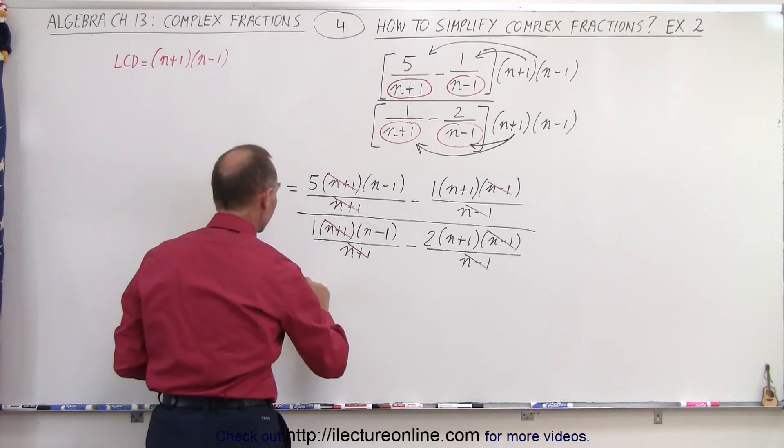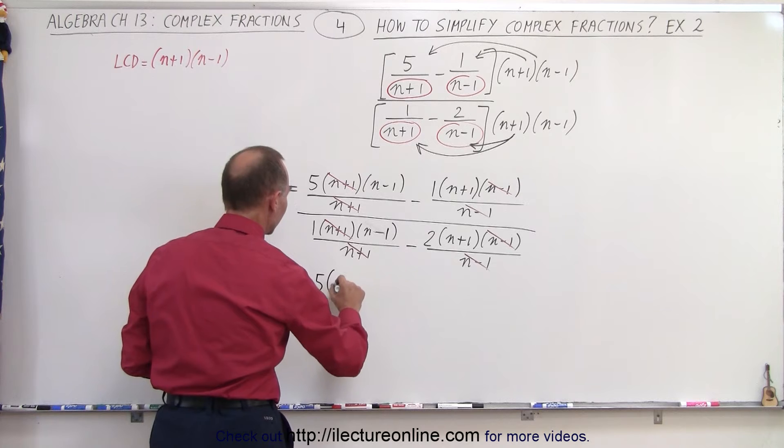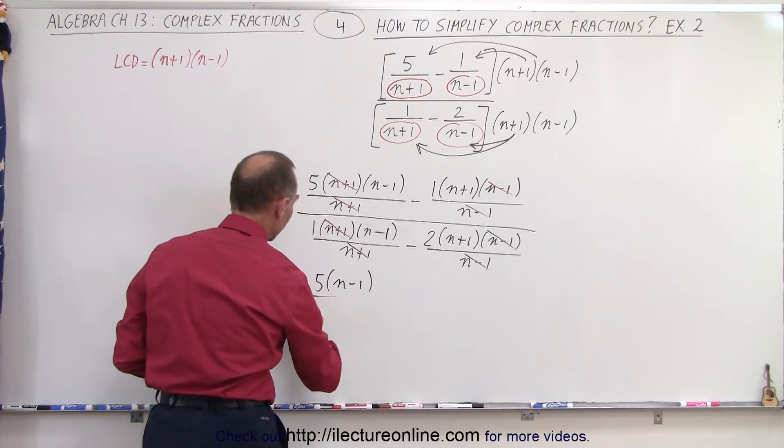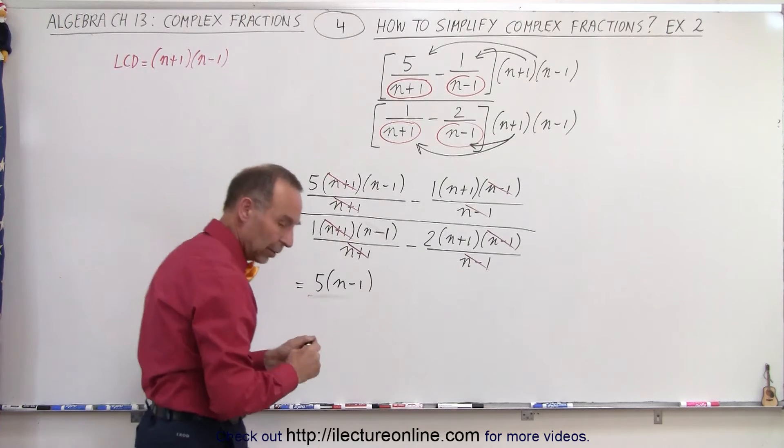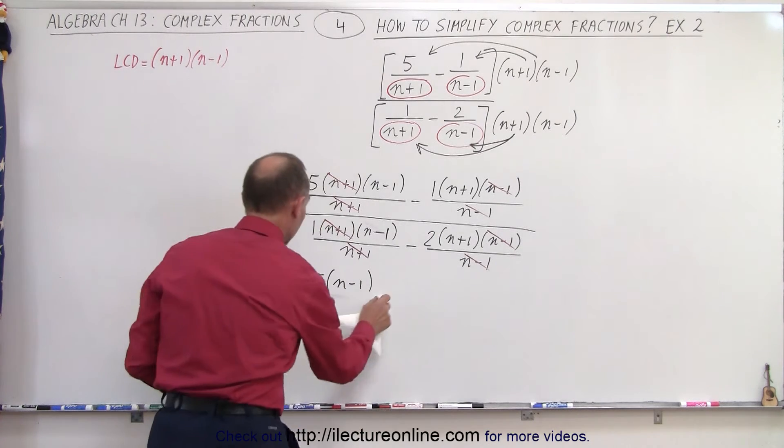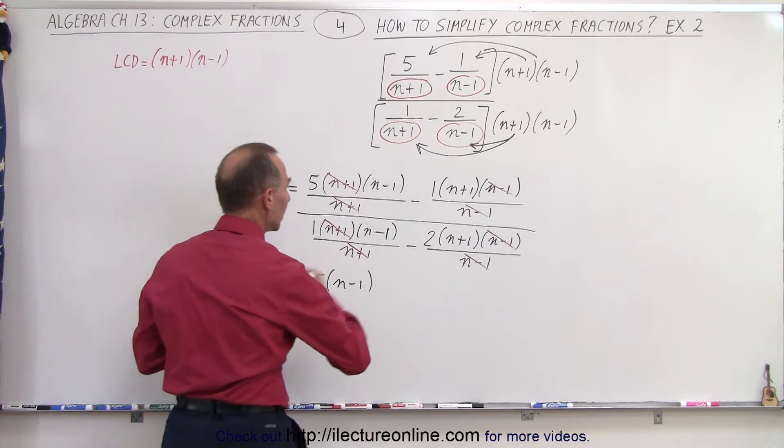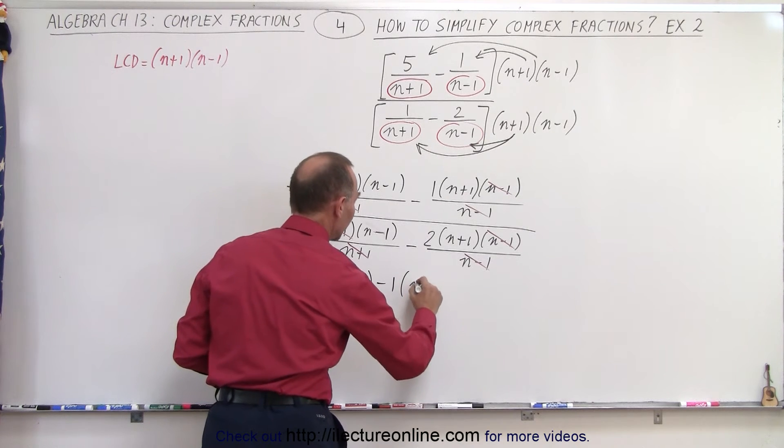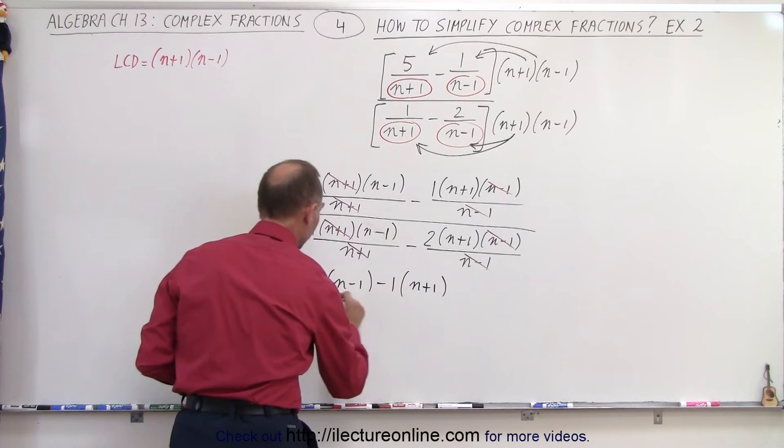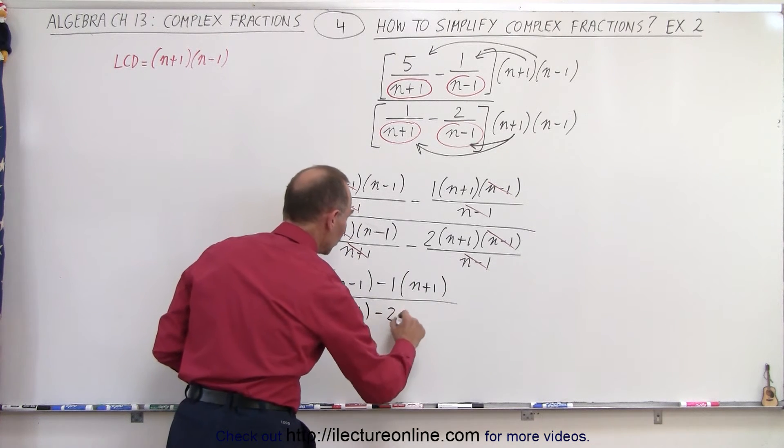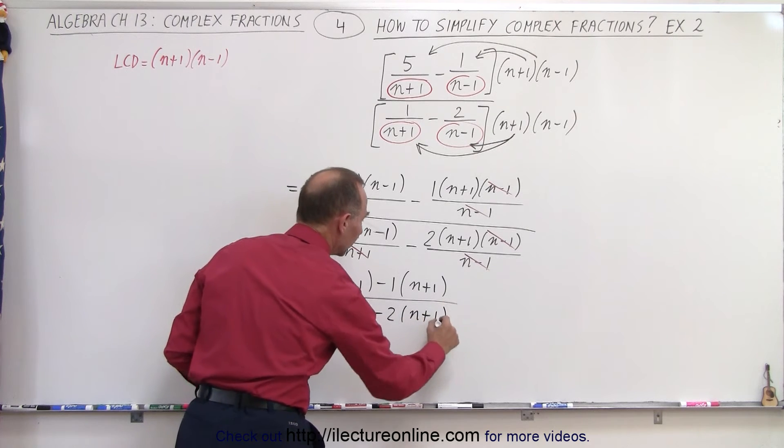So now you can see that this is equal to 5 times n minus 1 divided by, well, not divided by anything, it's divided by 1. So we can go ahead and we no longer have a denominator. So here we have minus 1 times n plus 1 all divided by, here we have 1 times n minus 1 minus 2 times n plus 1.